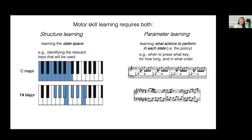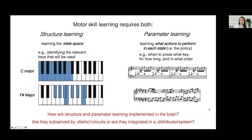Both these processes are important for successful motor skill learning, and so we wanted to know how structure and parameter learning are implemented in the brain — specifically, whether they're subserved by distinct circuits or integrated into a distributed system.